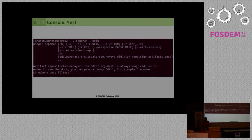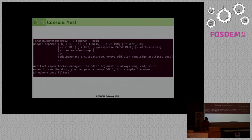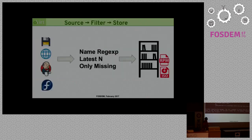It's distributed currently as RPMs. It's a Python application, but the problem is that it uses some command-line tools like createrepo from YUM and rpm-sign. These are not available as Python modules, so we can't just satisfy dependencies from PyPI. That's why it's packaged as an RPM. But if you have everything installed, you can also access it as a Python module because it's an actual Python module.